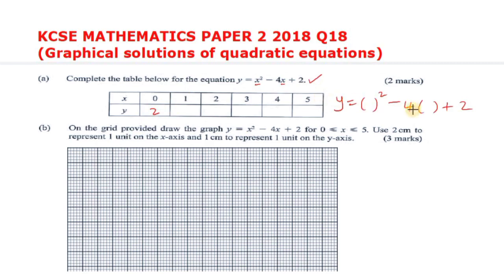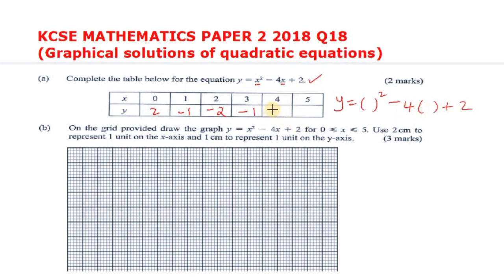When x = 1, y becomes -1. When x = 2: 2² = 4, minus 4×2 = 8, so 4 - 8 = -4, plus 2 gives -2. For x = 3: 9 - 12 = -3, plus 2 gives -1. For x = 4: 16 - 16 = 0, plus 2 gives 2. Finally for x = 5: 25 - 20 = 5, plus 2 gives 7.